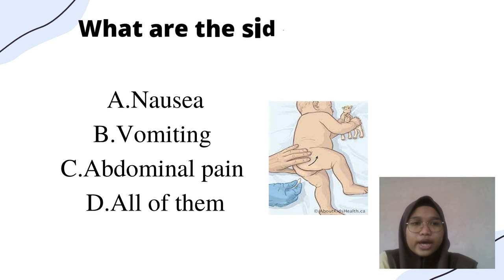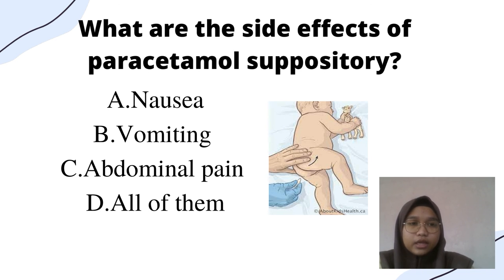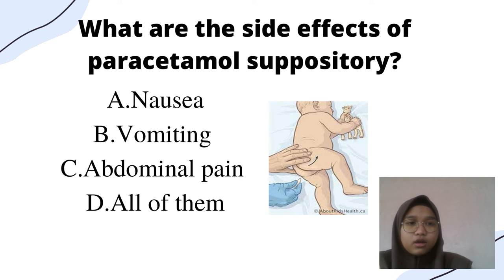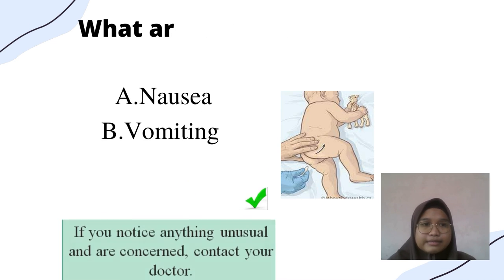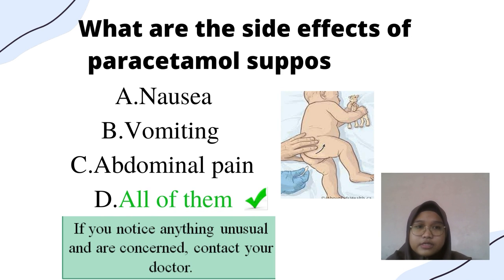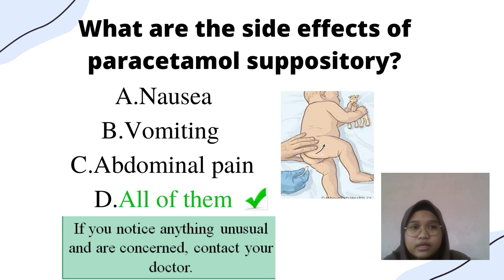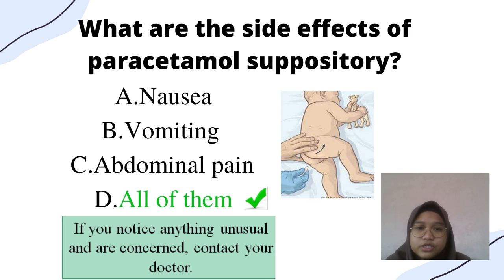Question: what are the side effects of Paracetamol suppositories? A — nausea; B — vomiting; C — abdominal pain; D — all of them. The answer is D — all of them. Nausea, vomiting, and abdominal pain are all side effects of Paracetamol suppositories.